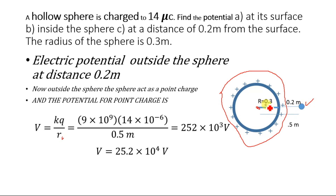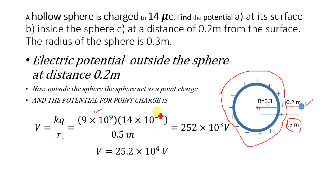The distance from the center of the sphere to this external point is 0.3 plus 0.2, which equals 0.5 meters. Substituting the values: k equals 9 times 10 to the power 9, q equals 14 micro coulombs which is 14 times 10 to the power minus 6, divided by r equal to 0.5 meters.